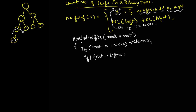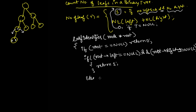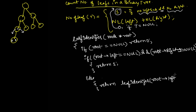Otherwise, if `root->left` is null and `root->right` is also null, then both pointers are null — there is no left and no right — so we return 1, meaning it is a leaf node. Otherwise, in the else part, we return `leaf_identifier(root->left)` plus `leaf_identifier(root->right)`.